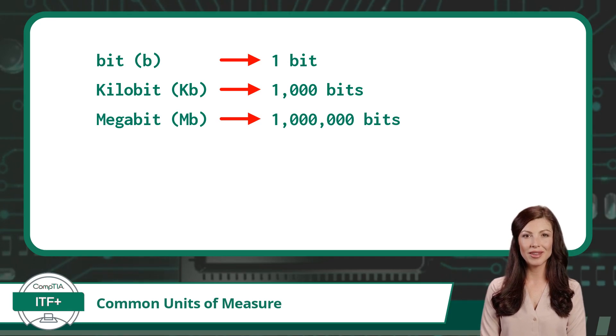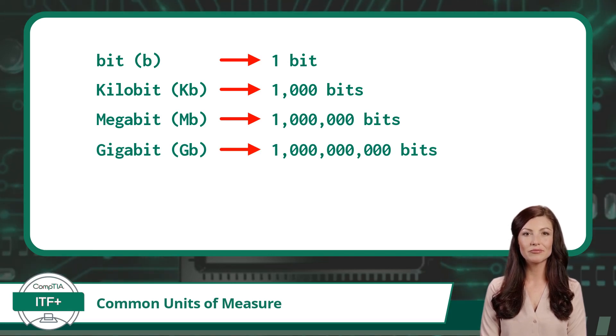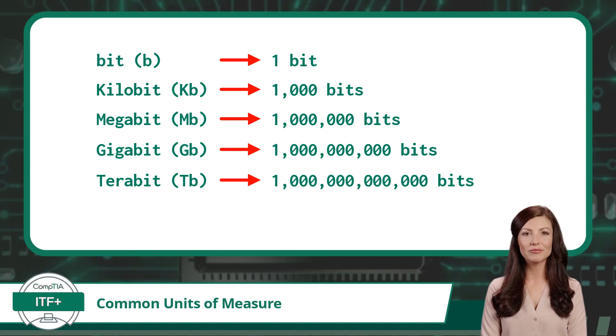This is followed by giga. Giga means billion, so a gigabit equals 1,000,000,000 bits. Then tera. Tera means trillion, so a terabit equals 1,000,000,000,000 bits.